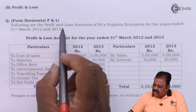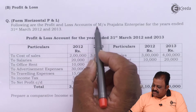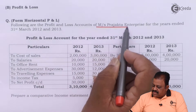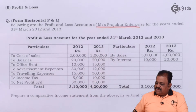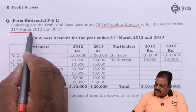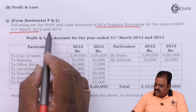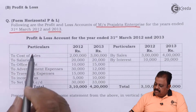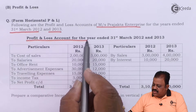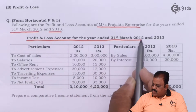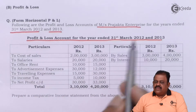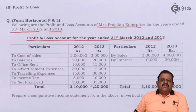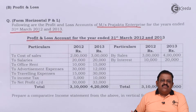Following are the profit and loss accounts of Rajakta Enterprises for the year ended 31st March 2012 and 2013. We have the profit and loss account for the year ending 31st March 2012 and 2013.